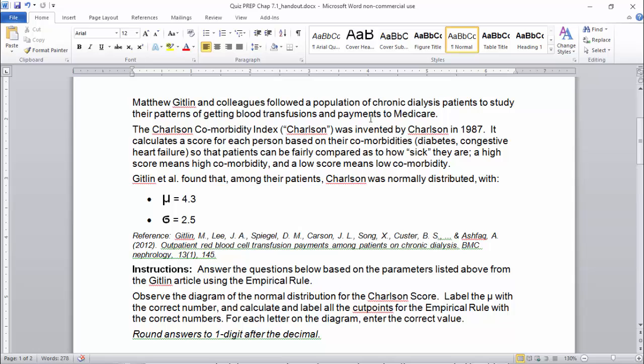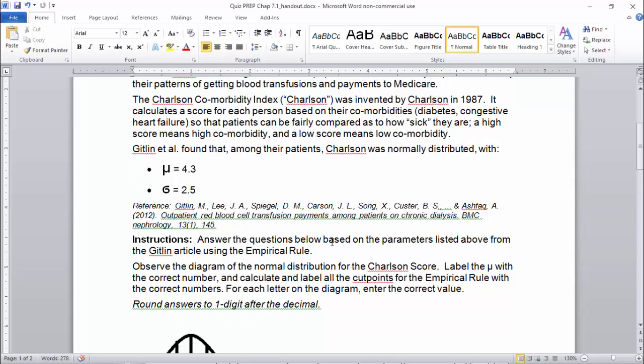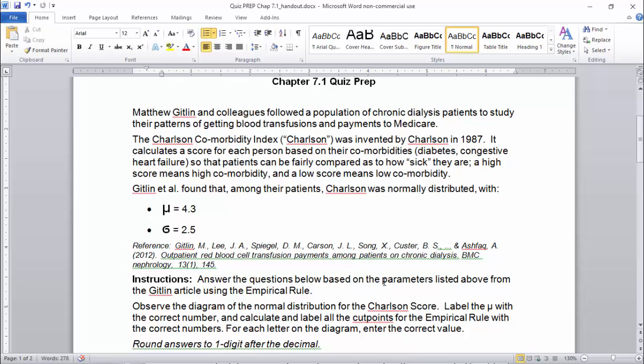But if you're a chronic dialysis patient, you probably got a lot going on. So Gitlin and his colleagues measured this population, they found a population mean Charlson of 4.3. That's a lot higher than zero. And they found a population standard deviation of 2.5.